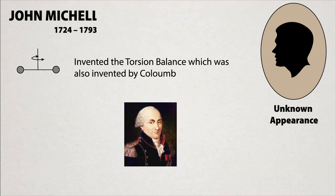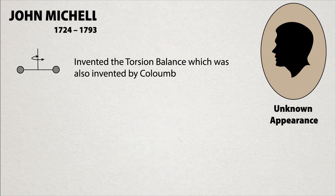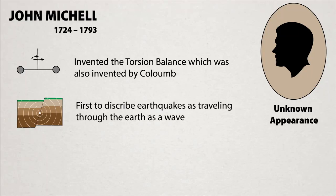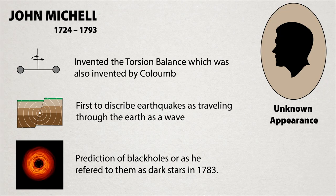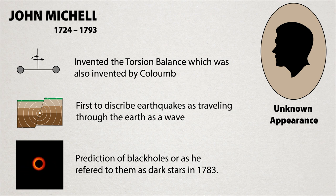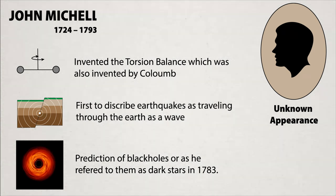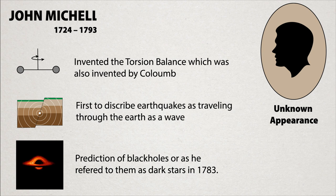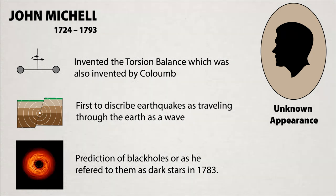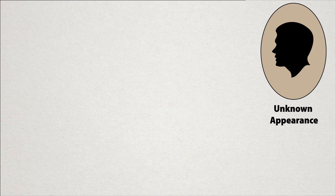which he used for measurements of charge rather than gravity. These accomplishments include being the first person to suggest that earthquakes travel as waves, as well as being the first person to propose the existence of black holes way back in the 18th century. Unfortunately, John Mitchell died before he could perform the measurements with his torsion balance and his equipment passed through several hands before finally finding a home with his contemporary Henry Cavendish.